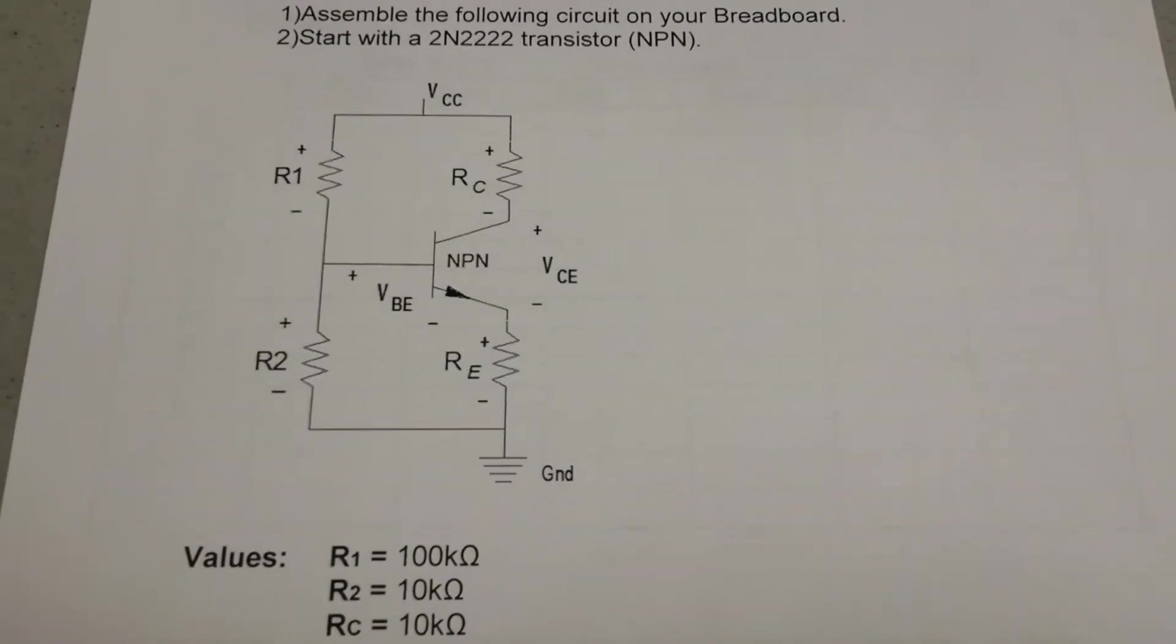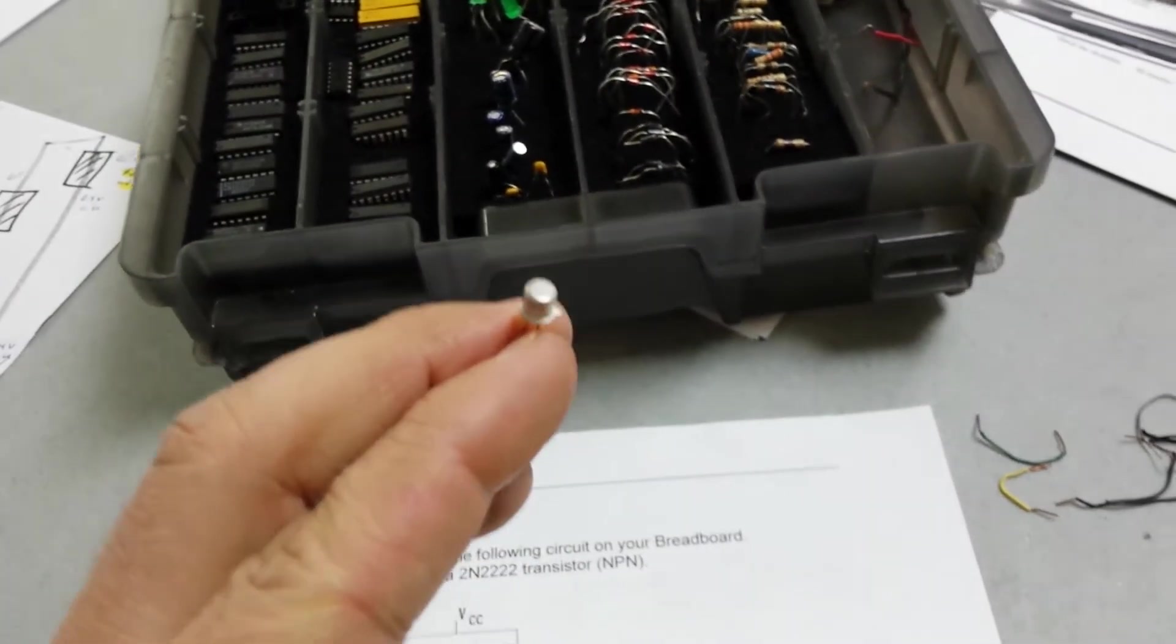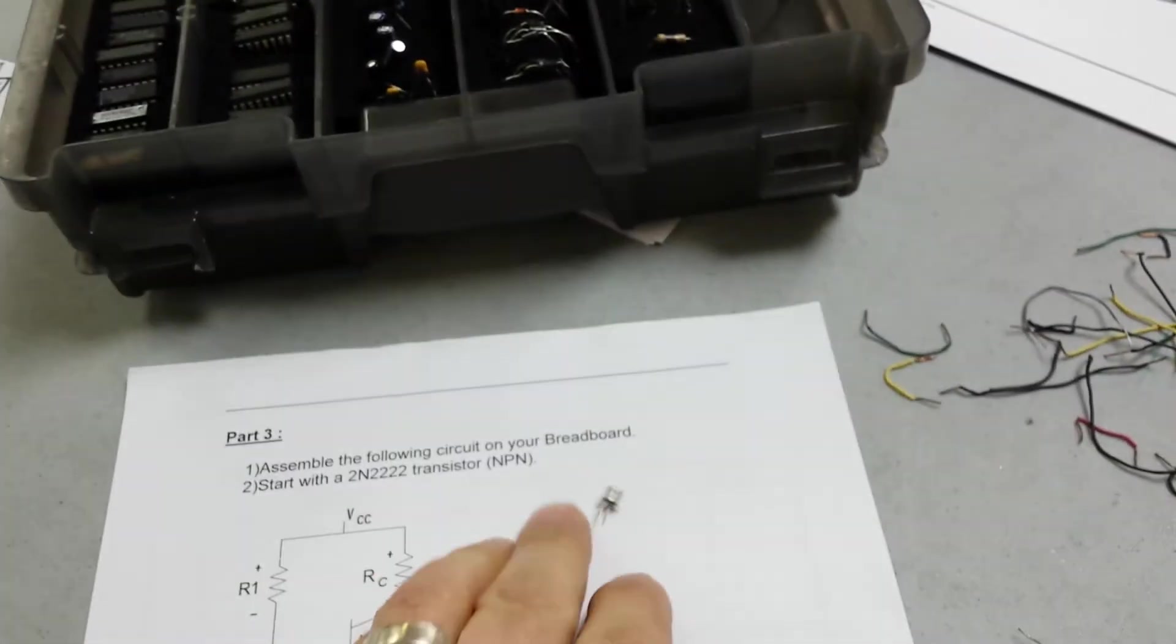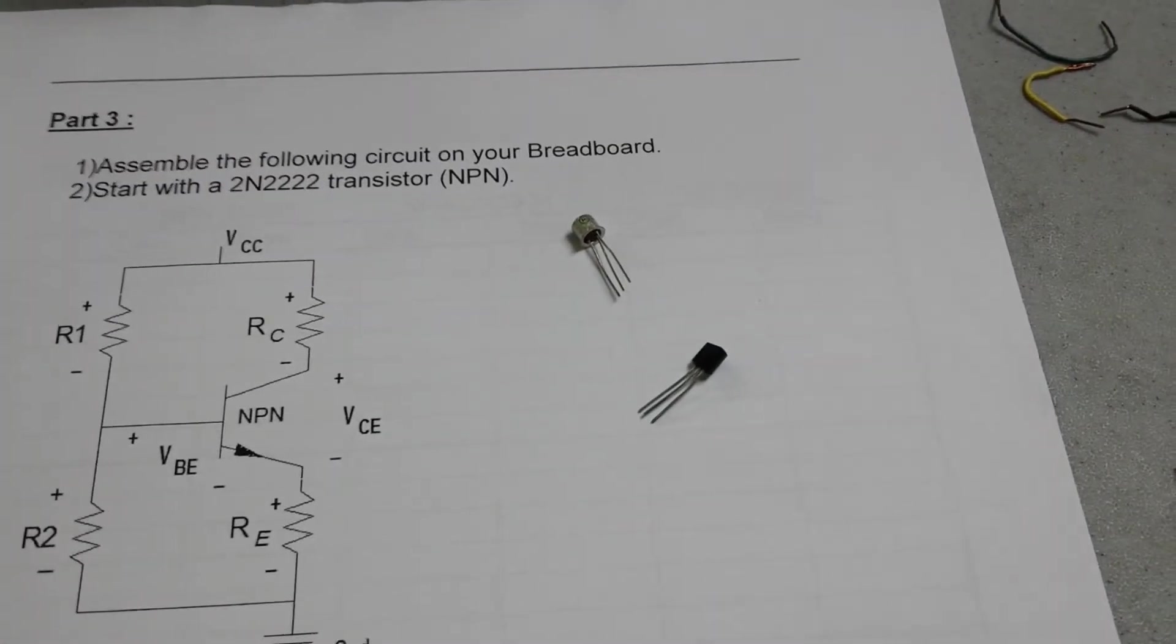So the 2N2222 transistor has a metal canister, such as this one here. The 3904 would be a plastic canister like that.